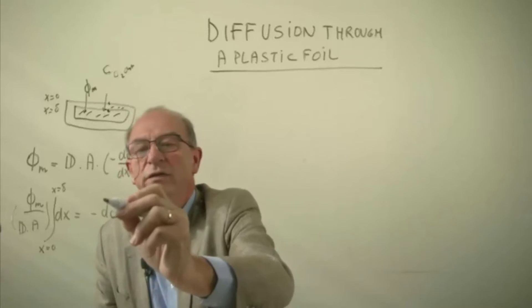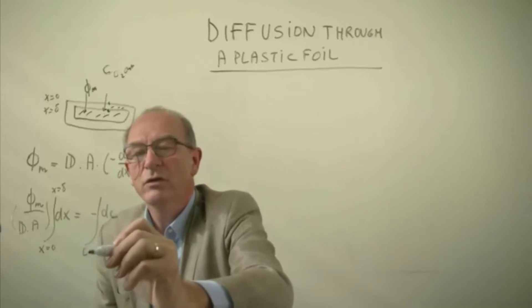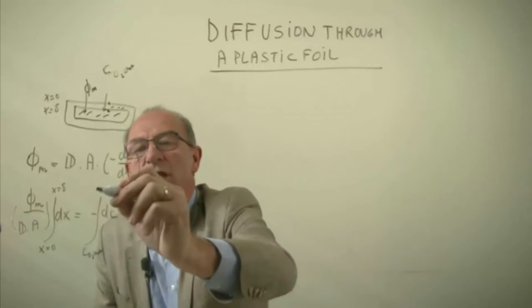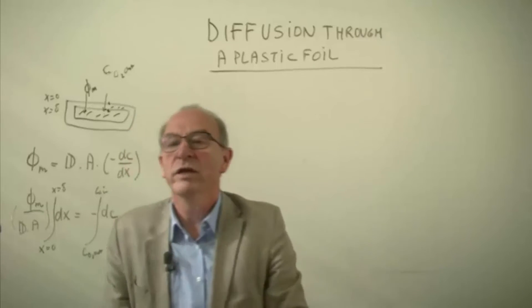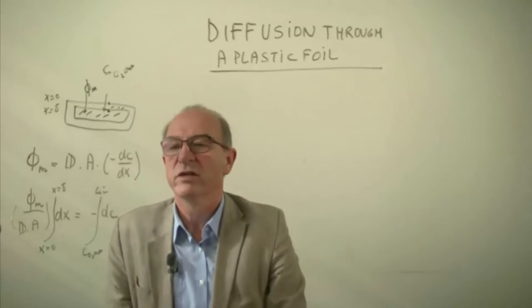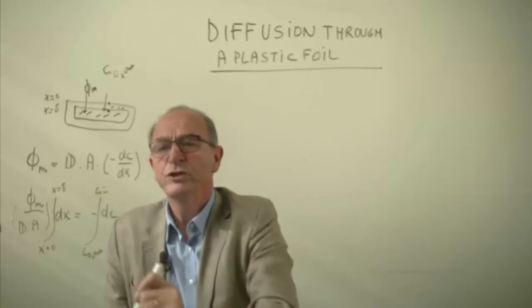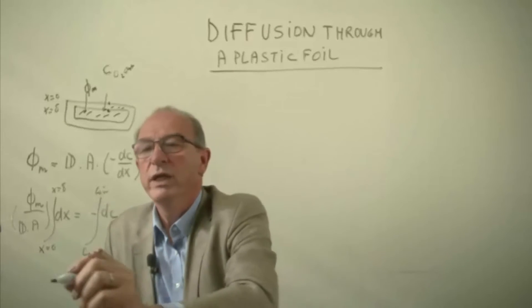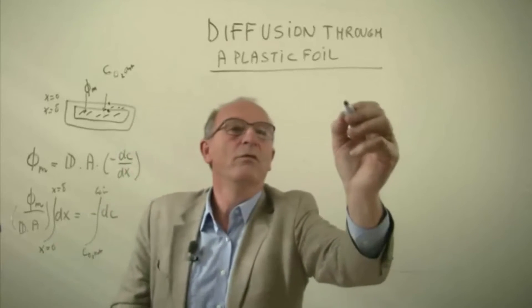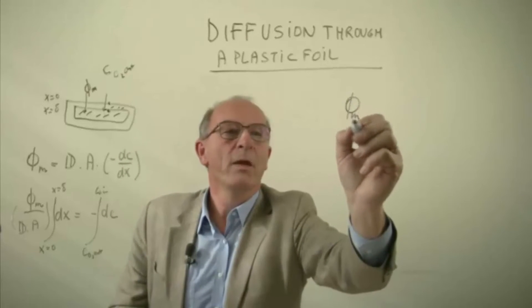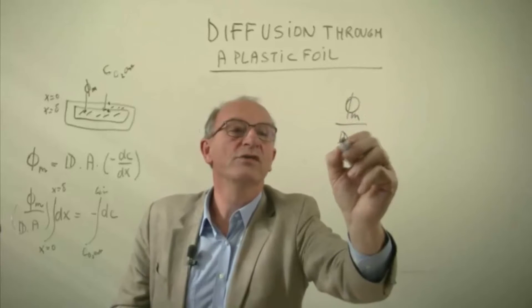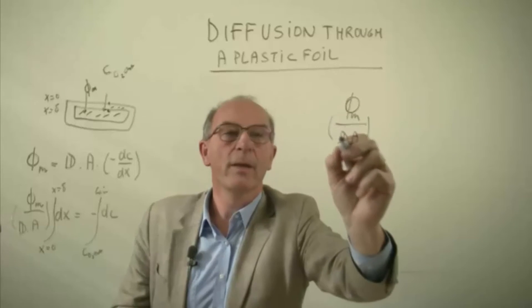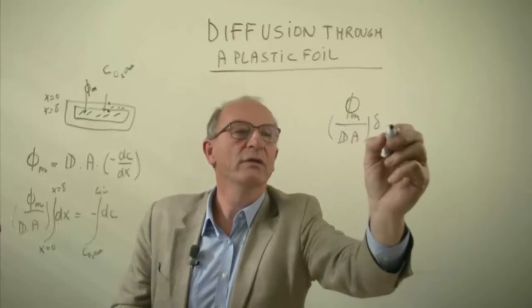So if x is 0 at the outside then we have here the concentration of oxygen at the outside minus the concentration integrating to the concentration at the inside. Well substituting all these values we get phi_m over the diffusion coefficient over the surface area multiplied by delta is equal to,